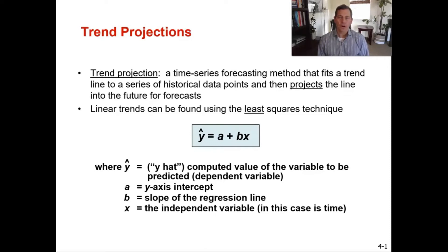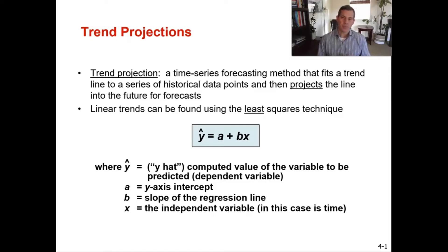Continuing on with chapter four and various forecasting techniques, we are going to move into trend projections using the least squares technique. Up to this point we've talked about moving averages, weighted moving averages, and exponential smoothing — all of those methods look at more near-term time periods. With least squares and regression analysis, we're going to be looking at projections that are more in the future, so longer-term type of forecasts.